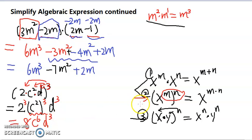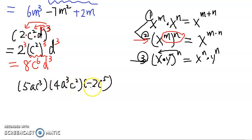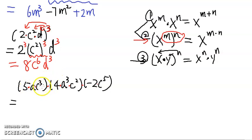Now the next problem is 5ac cubed times 4ac cubed c squared times negative 2c to the fifth. When we look at the formulas, the problem has multiplication everywhere. We don't see a power-of-power case, and we did not raise a product to a power, so it won't be the second or third formula. We don't see two powers beside each other either. So it's going to be the first formula — adding exponents. But to use the first formula, they must have the same base.